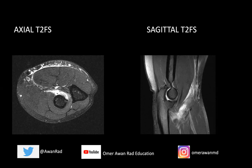Hello, everyone, and welcome to MSK Unknown Case Series, Case 22. This is an amazing case — I can't wait to share this with you. We have two MRI images: an axial T2 fat sat image on the left and a sagittal T2 fat sat image on the right.